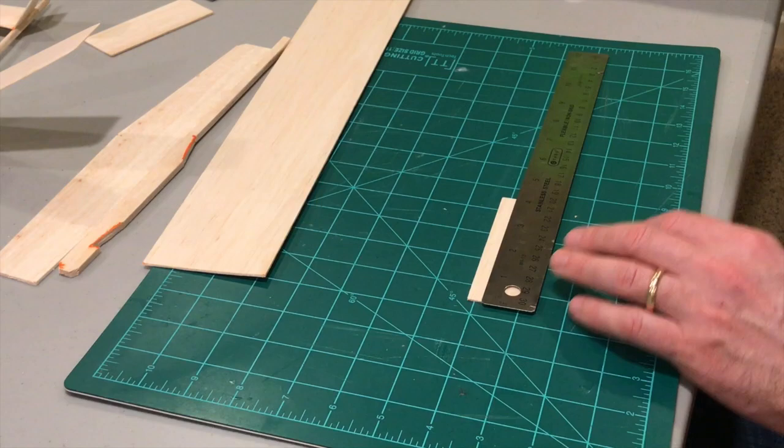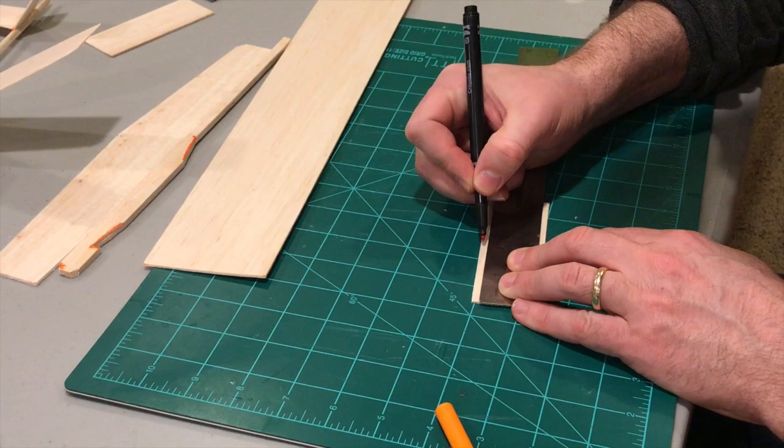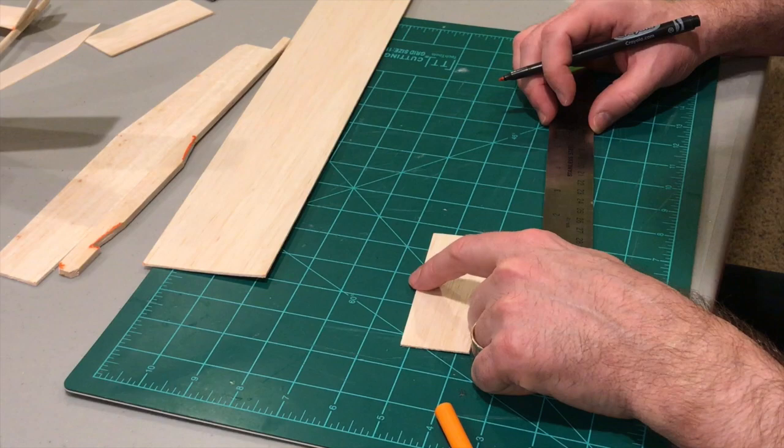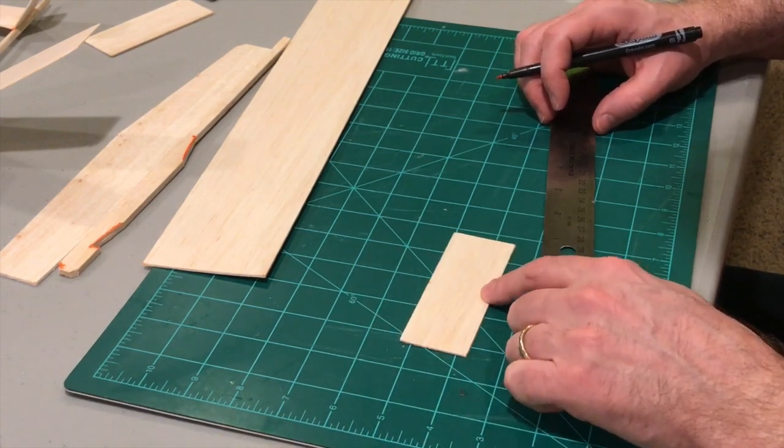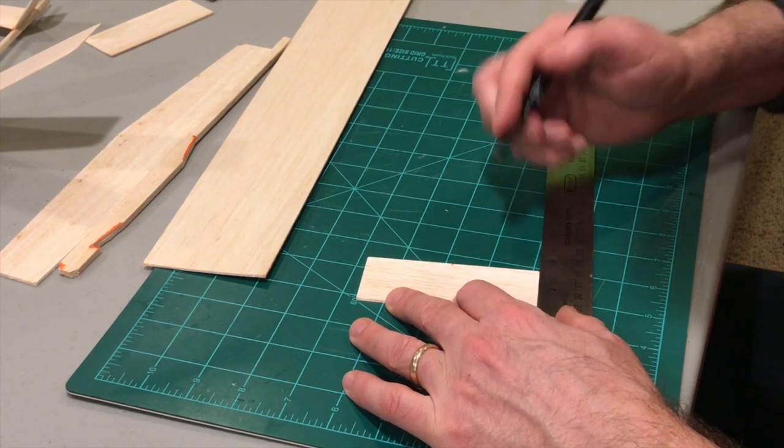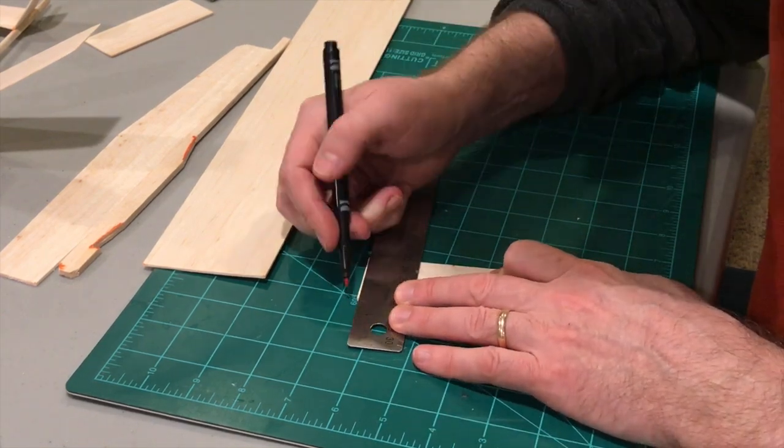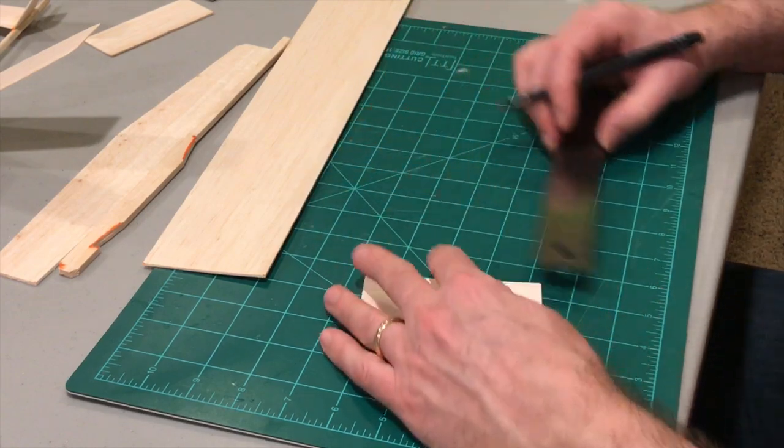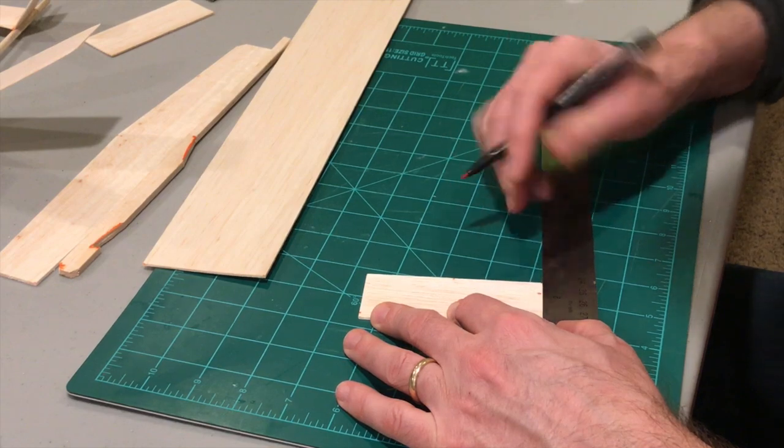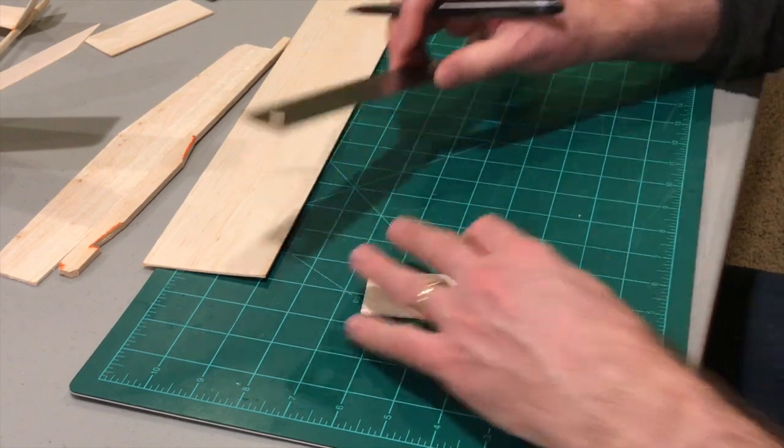I'm going to find the center point. Since it's four inches, two inches is the center point. This is going to be my leading edge, this is going to be my trailing edge. I'm going to bring forward one-eighth of an inch from the trailing edge, put a tick mark. And then from that tick mark I go another one inch, mark that.